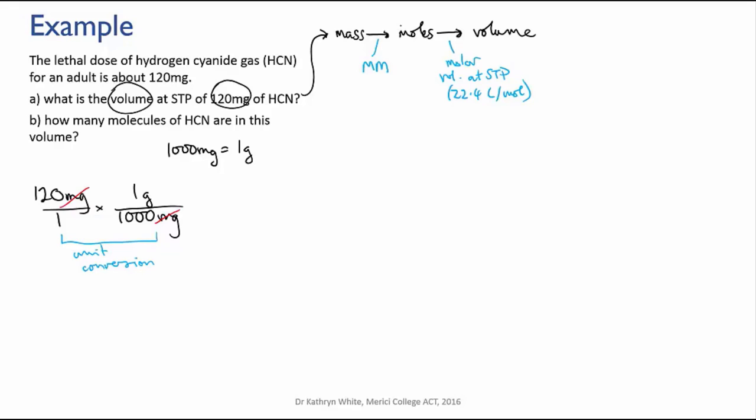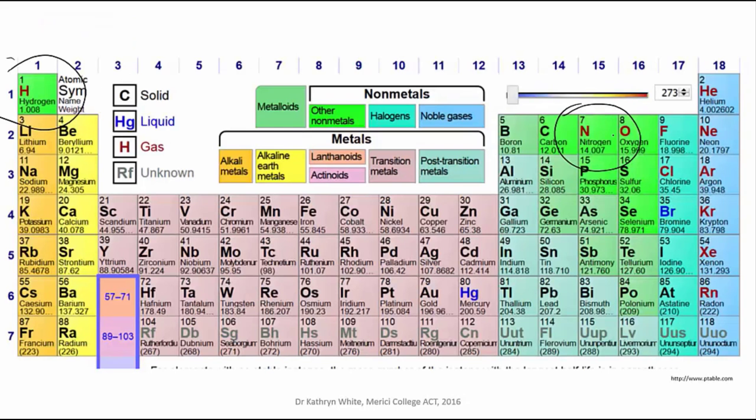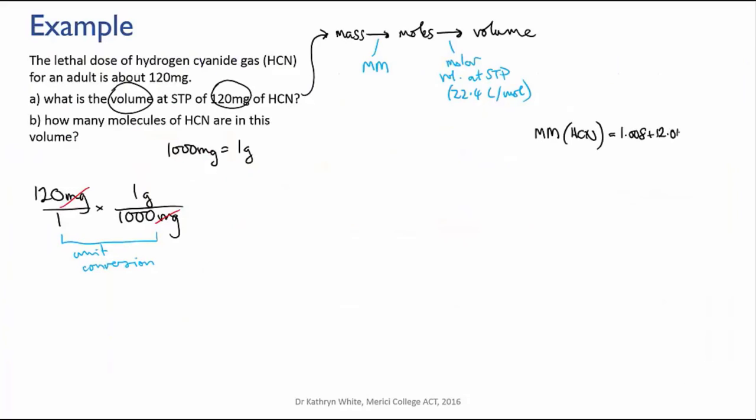The next step is to change the mass in grams to moles. So I need the molar mass as a conversion. I haven't calculated the molar mass yet, so I'm going to need to go back and do that. And I'm going to need the molar masses of hydrogen, carbon, and nitrogen, which gives me the molar mass of 27.026 grams per mole.